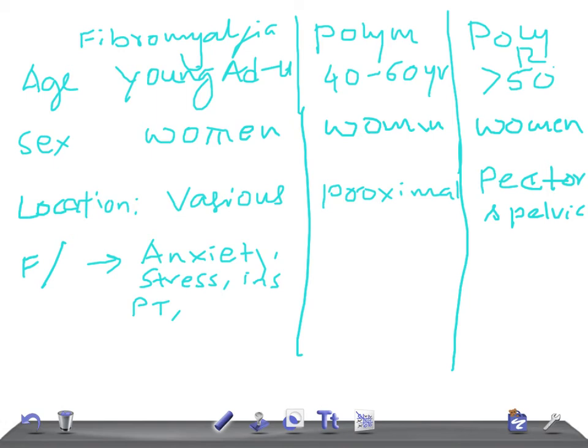For polymyositis, the classic findings to look for in USMLE are elevated CPK, abnormal EMG (electromyography), and abnormal muscle biopsy.